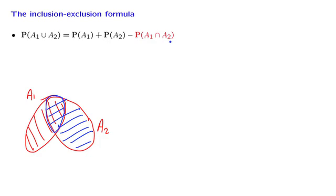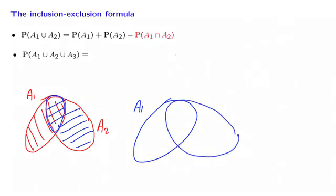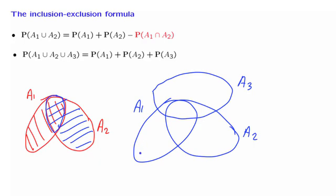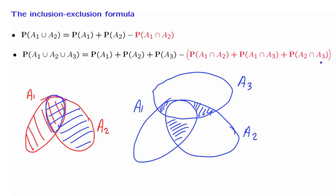Can we generalize this thinking to the case of three events? Suppose that we have three events: a1, a2, and a3, and we want to calculate the probability of their union. We first start by adding the probabilities of the different sets. But then we realize that this part of the diagram has been counted twice — it shows up once inside the probability of a1, and once inside the probability of a2. So we need to make a correction and subtract the probability of this intersection, and similarly subtract the probability of the other pairwise intersections.